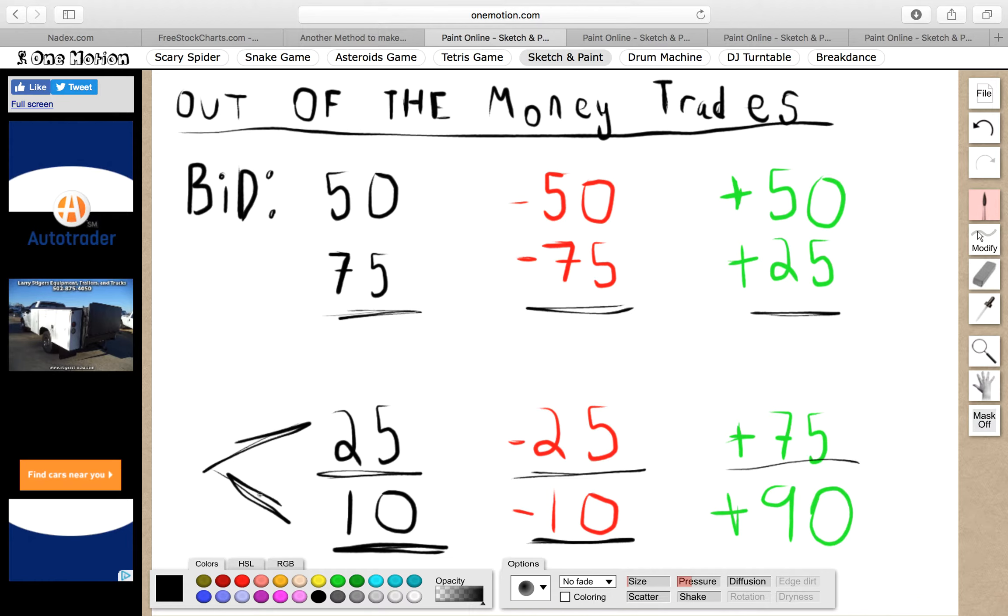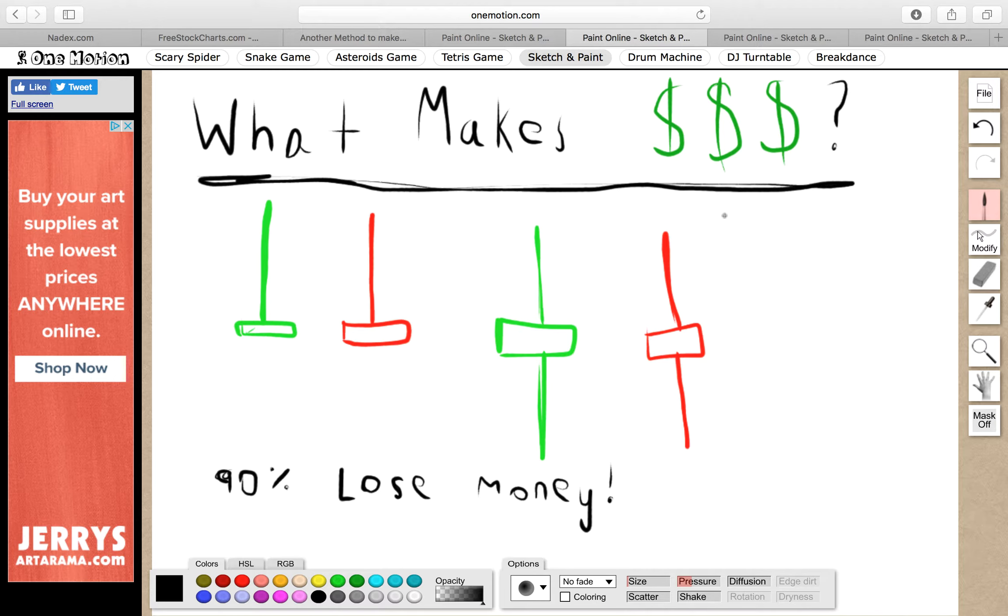If you just think logically it's better to risk less to make more than it is to risk more and make less. And so this is the basic premise behind out of the money trades. You can see why I like them so much because I love seeing myself turn, I've turned $100 into $950 in the past. That is what is exciting to me.